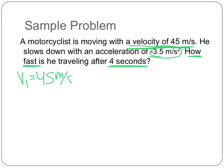So he's moving initially with a velocity of 45 meters per second. He slows down. So my acceleration is negative. Acceleration can be negative, because how else would I slow down? And after 4 seconds, we need to figure out how fast he's traveling. So we're also looking for Vf in this equation.